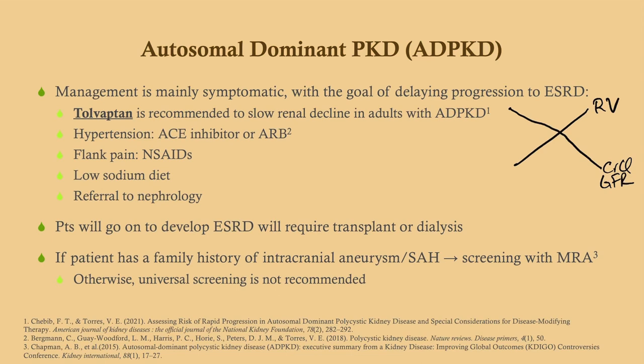An important complication to remember is intracranial aneurysm. The question is whether we screen patients — and in most cases, the answer is no. If a patient has a family member with a documented intracranial aneurysm or subarachnoid hemorrhage, then you should screen. Routine screening is not recommended. You might also screen a patient who is, say, an airline pilot because of the risks involved, or certainly if they have any CNS symptoms.